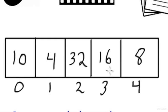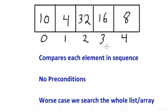To recap: linear search compares each element in sequence until it finds what it's looking for. If the value isn't in the array, we have to traverse and compare every single element before finding that out. It has no preconditions, and in the worst case it searches through the whole array, which could be quite bad. The number of comparisons grows proportionally to the size of the array, though we can always get lucky and find the value in the very first element. Let's go over to Eclipse and code up our own version of linear search.